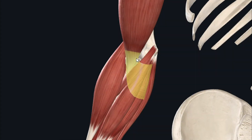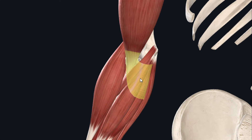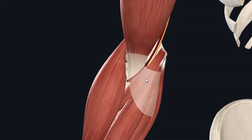The bicipital aponeurosis is a flat sheet of tendon which comes off the distal end of the insertion tendon of the biceps brachii. It provides strength and reinforcement to the cubital fossa — the anatomical area on the front of the elbow. The bicipital aponeurosis also provides protection to important structures in this region: the brachial artery and the median nerve.